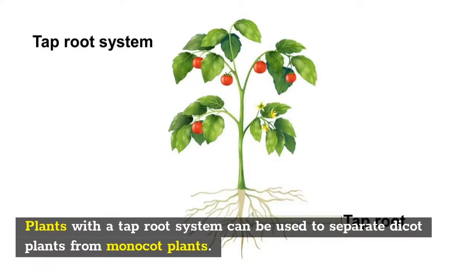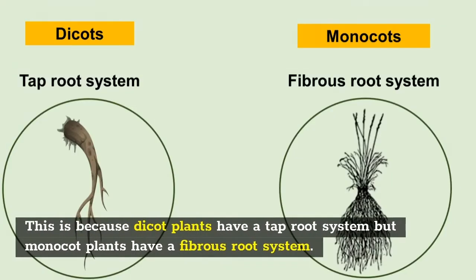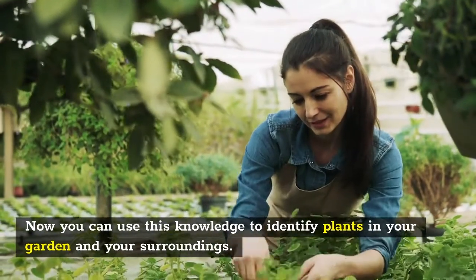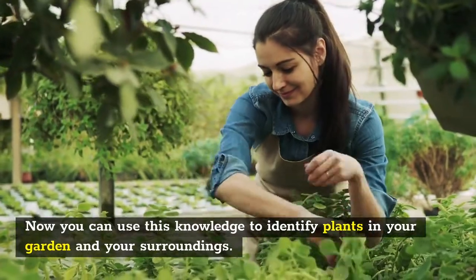Plants with a tap root system can be used to separate dicot plants from monocot plants. Dicot plants have a tap root system, but monocot plants have a fibrous root system. Now you can use this knowledge to identify plants in your garden and your surroundings.